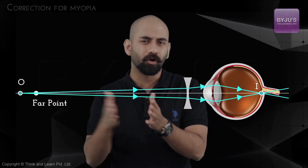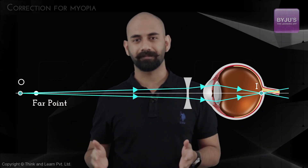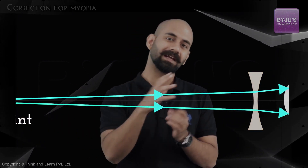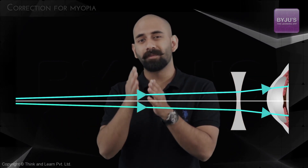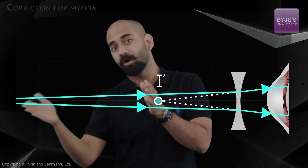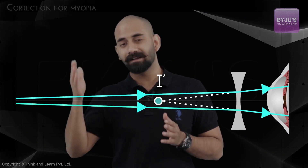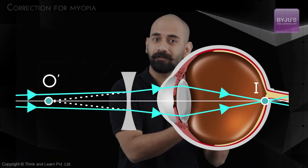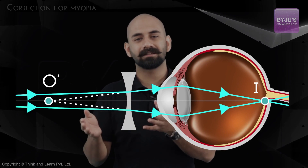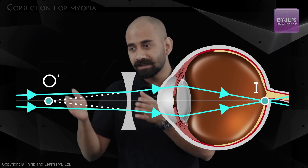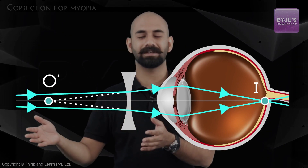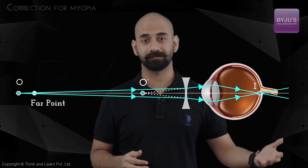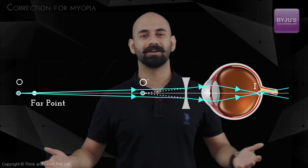By placing a diverging lens there, the rays hit the lens, get diverged, and the lens forms a virtual image that is closer to the eye. That image acts as the object for the crystalline lens. All you need is for that lens to create an image within the far point of the eye, and the crystalline lens will have no trouble focusing those rays onto the retina.